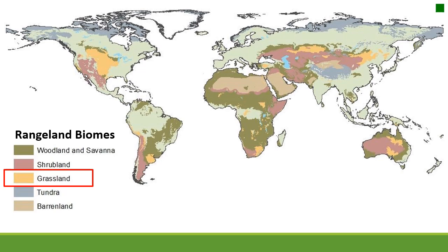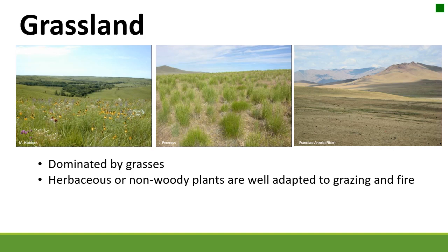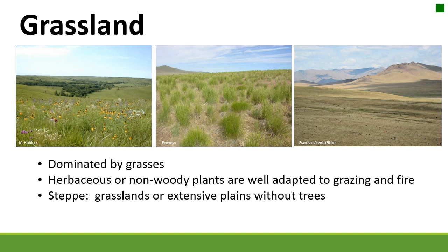The first biome we'll talk about is grasslands. Grasslands typically have a range in temperature — not extreme in either direction — but have lower precipitation, and they occur on all continents except Antarctica. They are obviously dominated by grasses, which are well adapted to grazing and fire. Many of these communities evolved with bison, so they're adapted to grazing. Fire is a natural process, and grasses have meristematic tissues down toward the ground so they can survive fire.